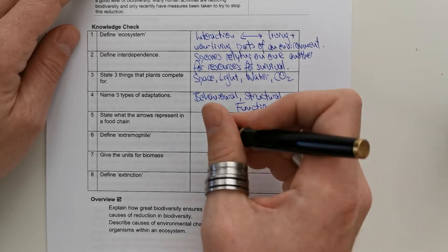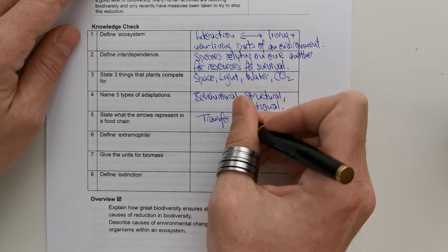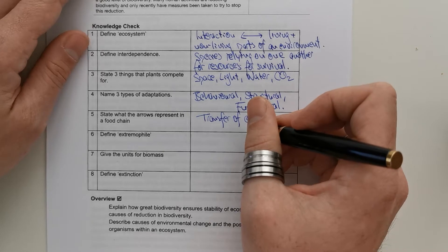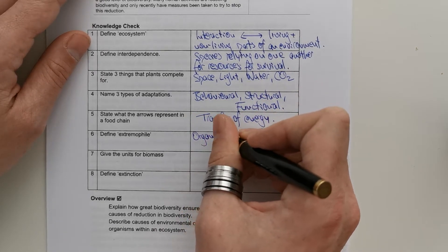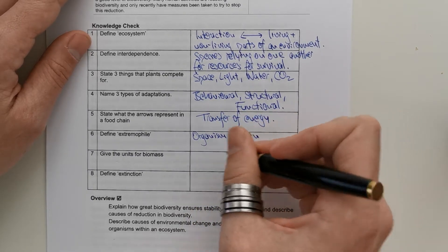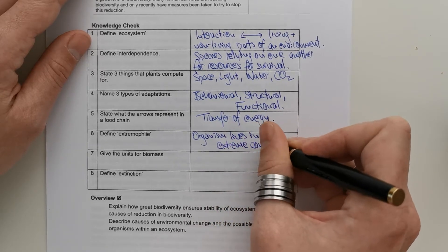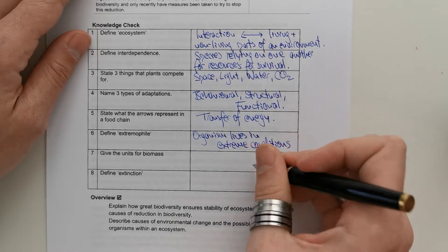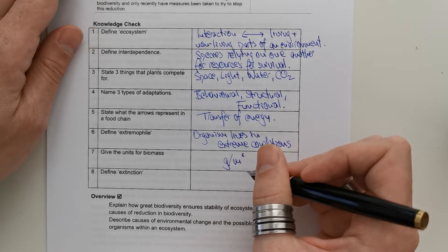State what the arrows represent in a food chain. They represent the transfer of energy between organisms. Define an extremophile. It's an organism that lives in extreme conditions.